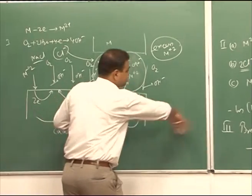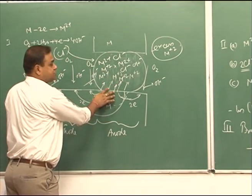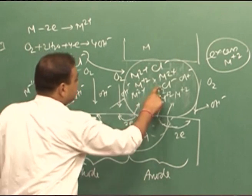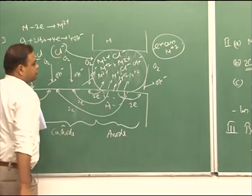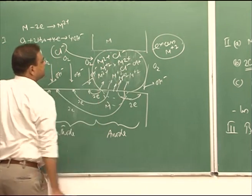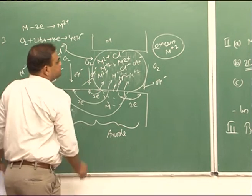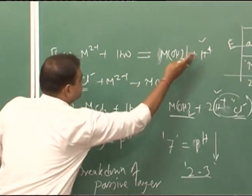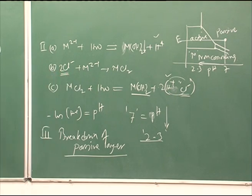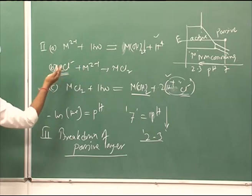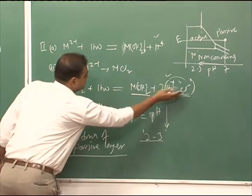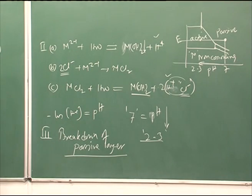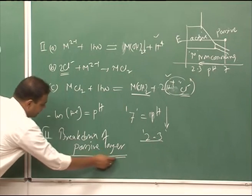Combining all three stages: initiation of a concentration cell — more dissolved oxygen outside, less inside the crevice — makes the interior preferentially anodic and the exterior cathodic. More metal dissolution occurs; the positive metal ion concentration increases, so M²⁺ hydrolyzes with H₂O to form H⁺. Chloride ions migrate in to neutralize excess M²⁺, forming metal chloride salts, which again hydrolyze to form H⁺ and Cl⁻. This increases hydrogen ion concentration, decreases pH, increases chloride concentration, and finally causes breakdown of the passive film.